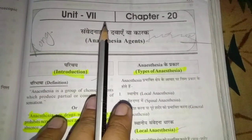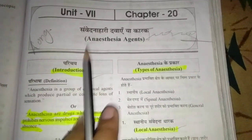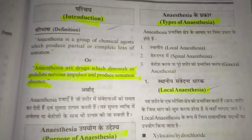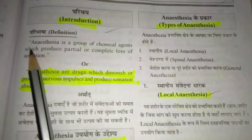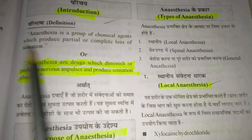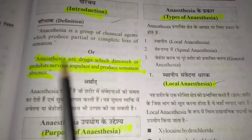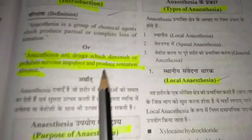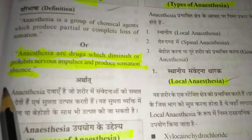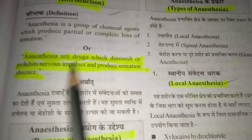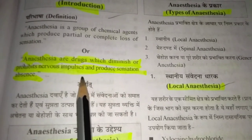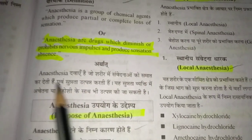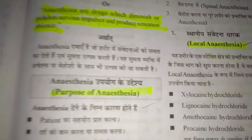Chapter 20, Unit 7: Anesthesia Agents Introduction. Anesthesia is a group of chemical agents which produce complete loss of sensation. Anesthesia drugs dismiss or prohibit nervous impulses and produce absence of sensation.